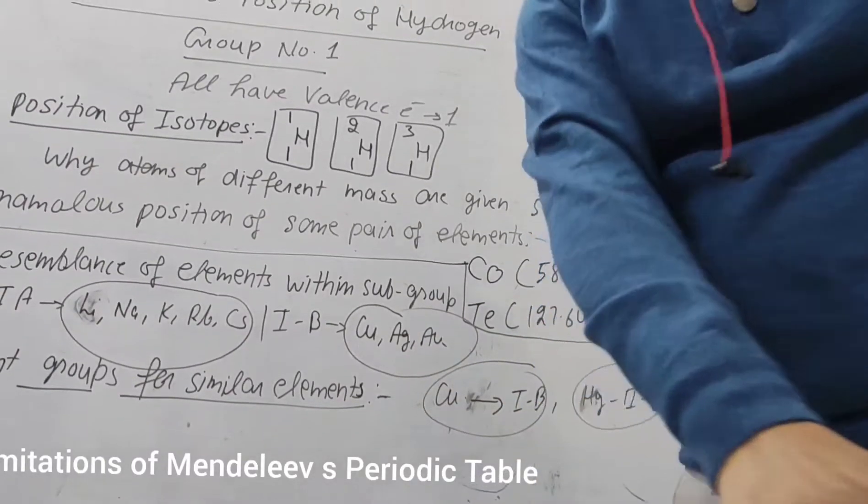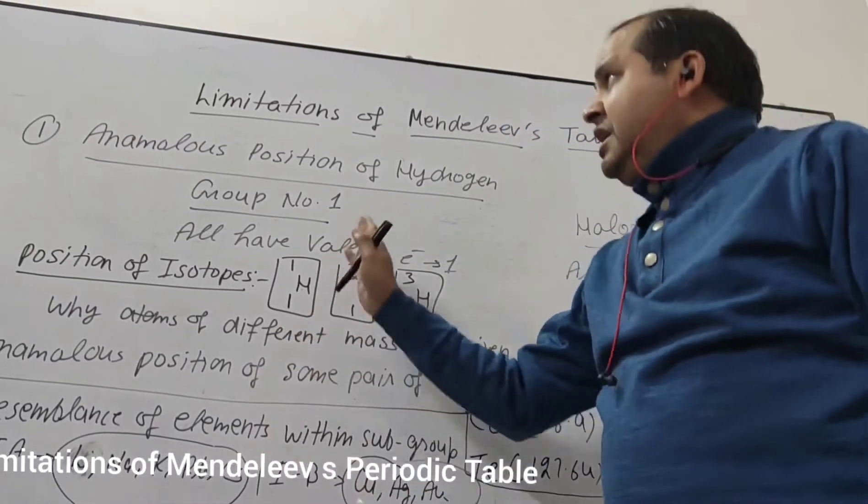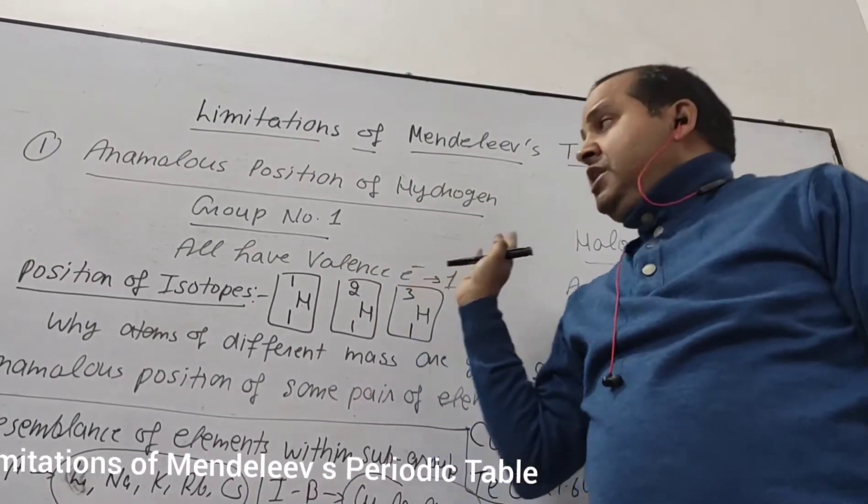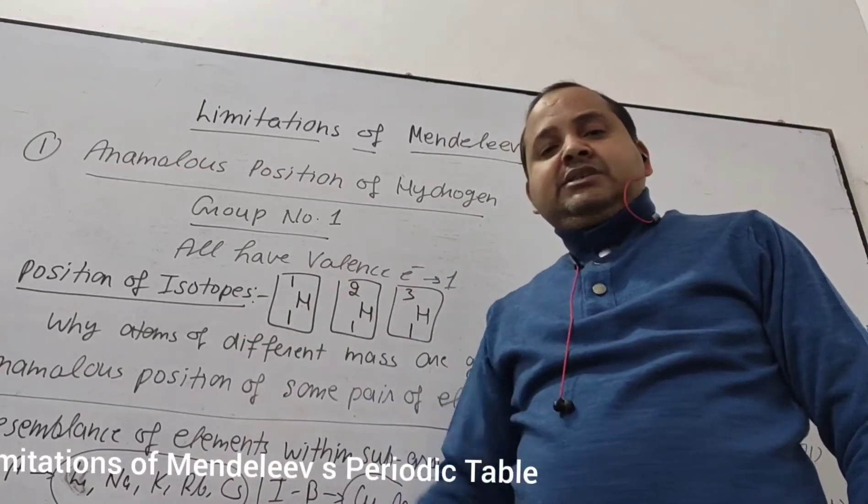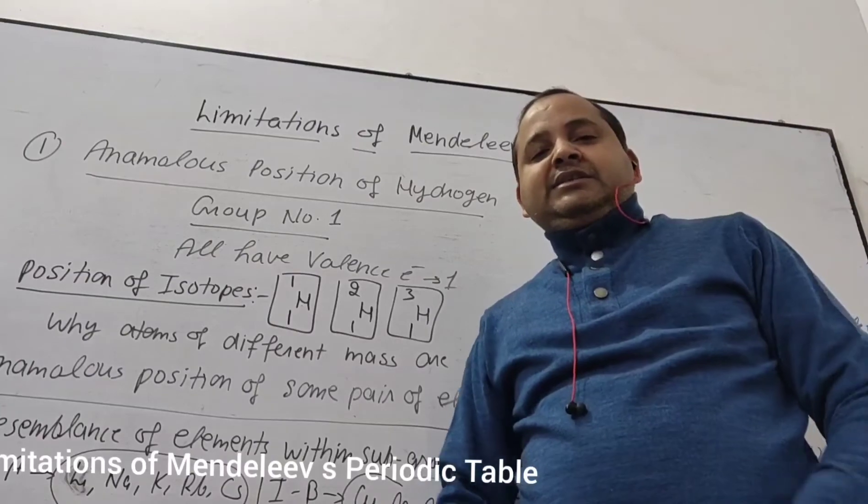You can see, so by this way we can see that these all are the limitations of Mendeleev's Periodic Table which we have. Some out of them we have corrected in the next table which is Modern Periodic Table. So that we will discuss in the next class.